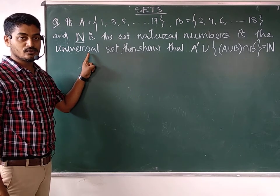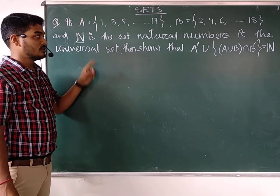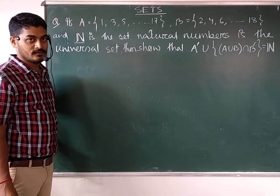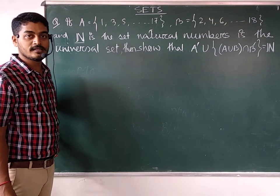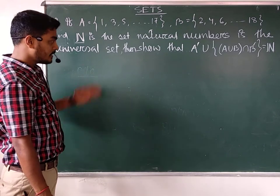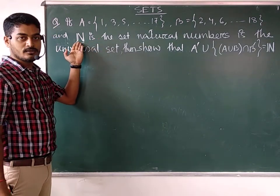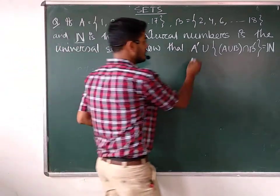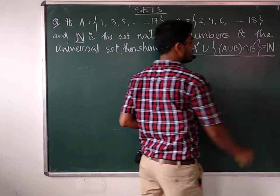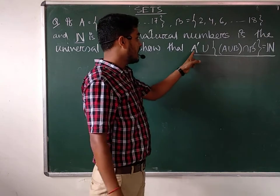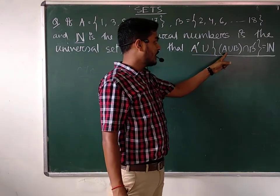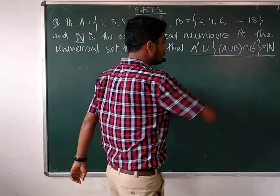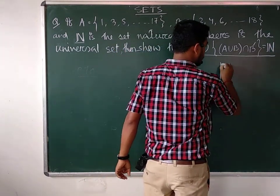We have already explained this: depending upon the problem, the universal set will be different. So here in this lecture, the set of natural numbers will behave just like the universal set. Then we have the expression whose value is equal to the natural numbers set. A complement — you will know — A union B complement is equal to the universal set.